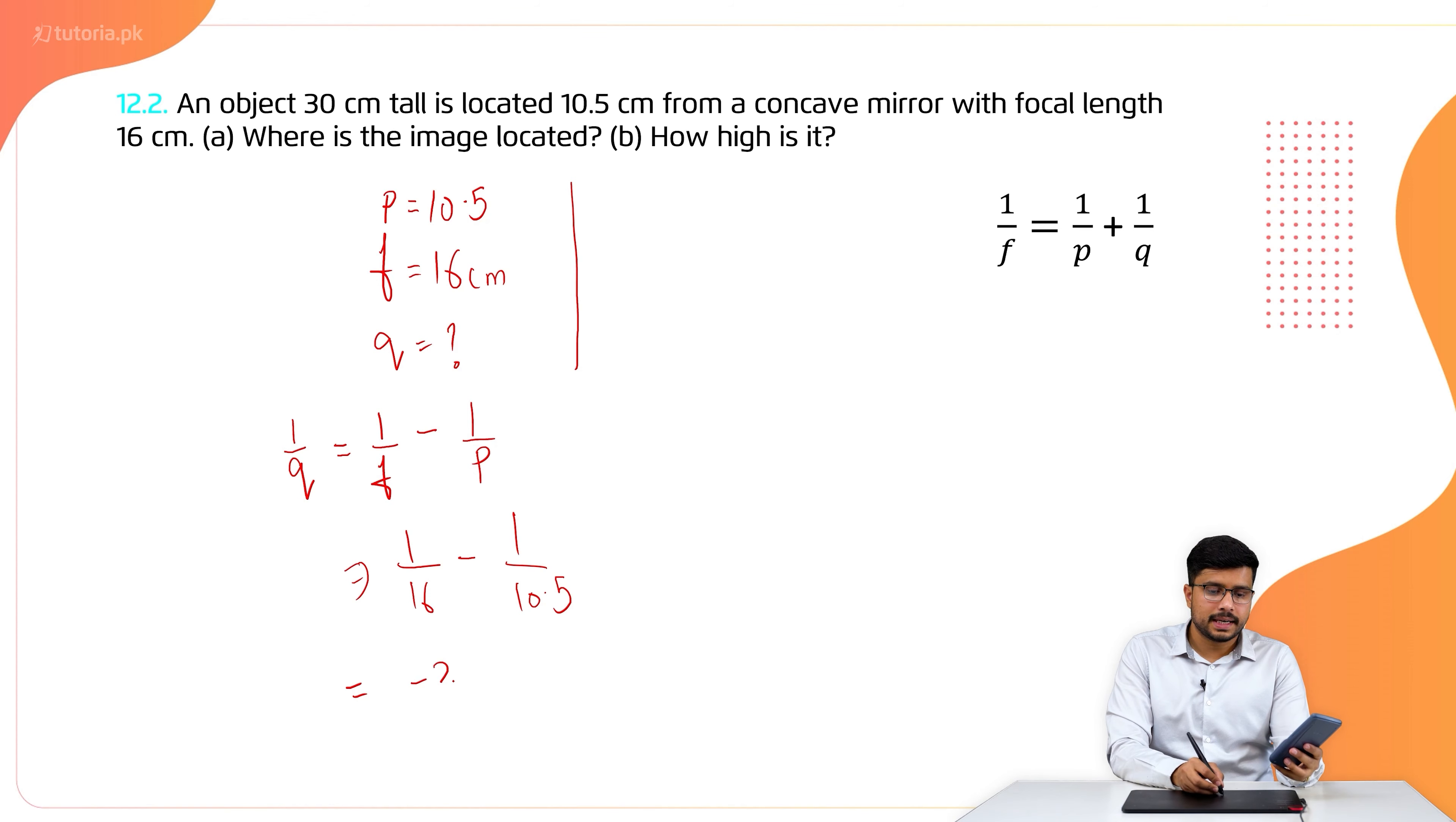How high is it? We have to find the image height. If we have 30 cm, we have the object height. O is equal to 30 cm. We have to find the image height.